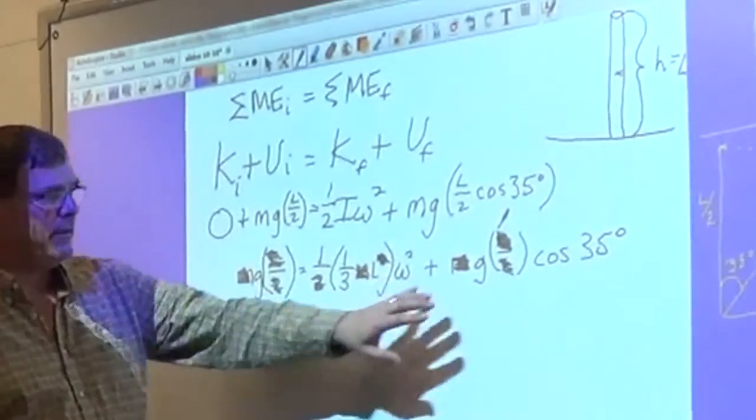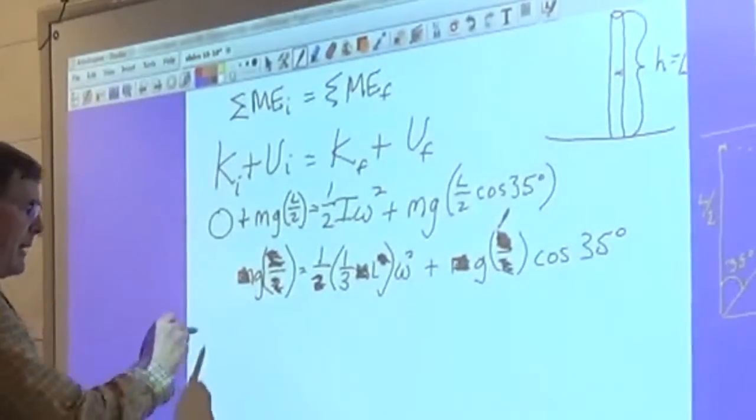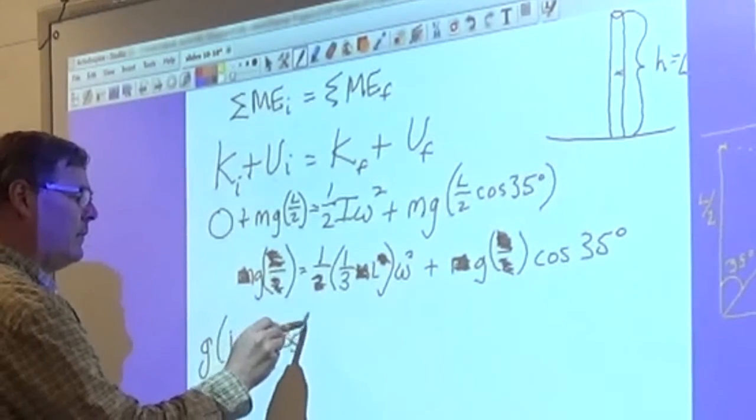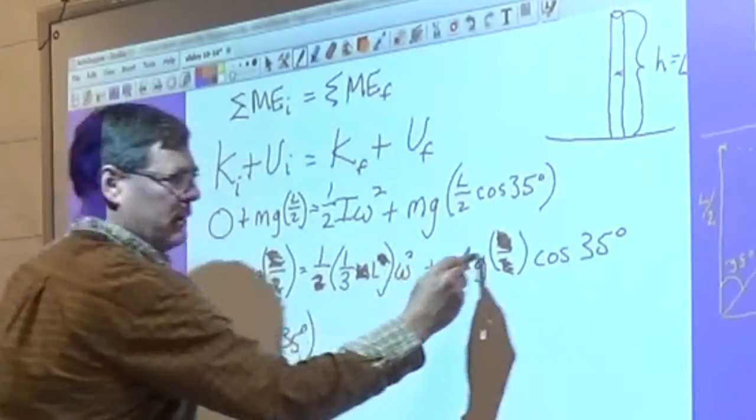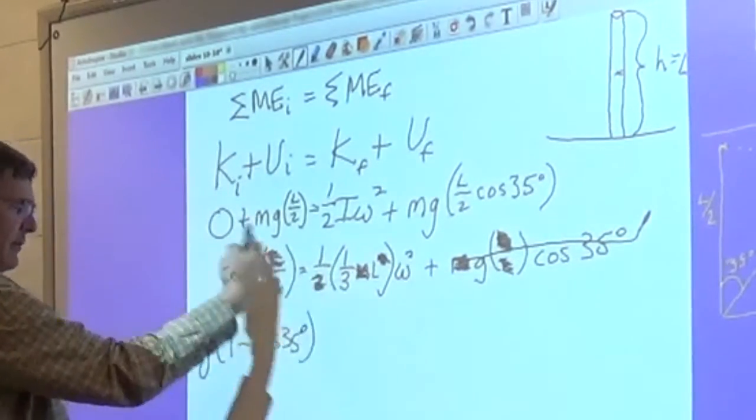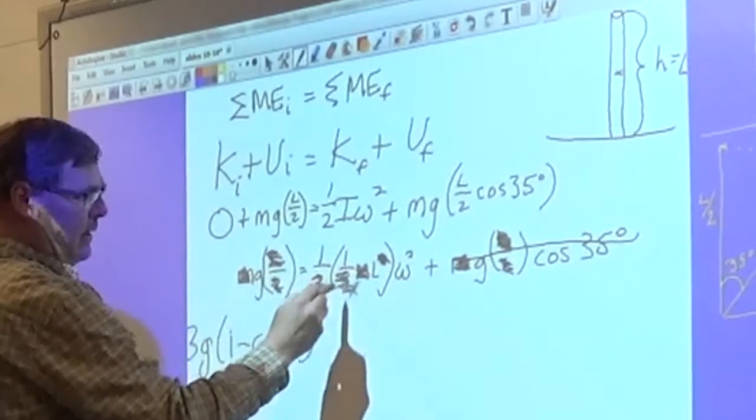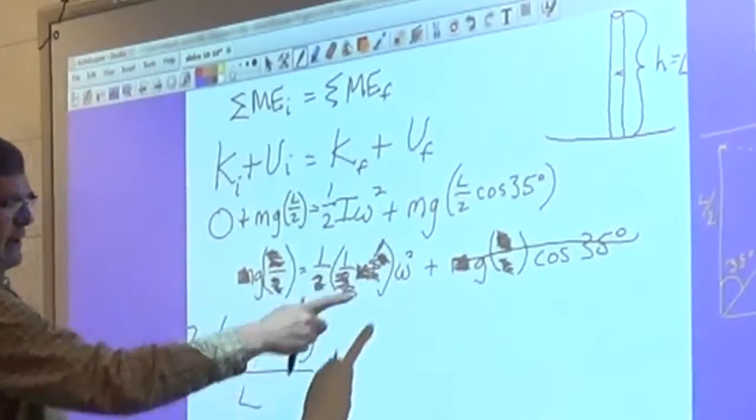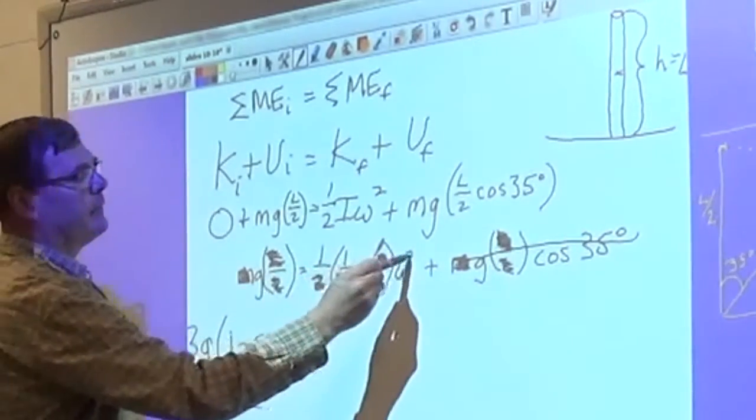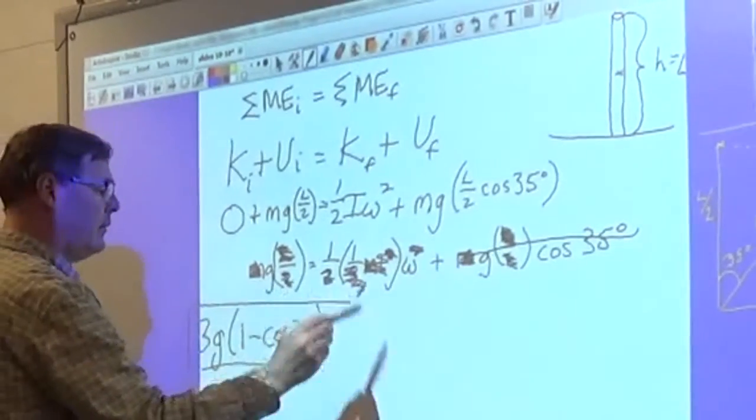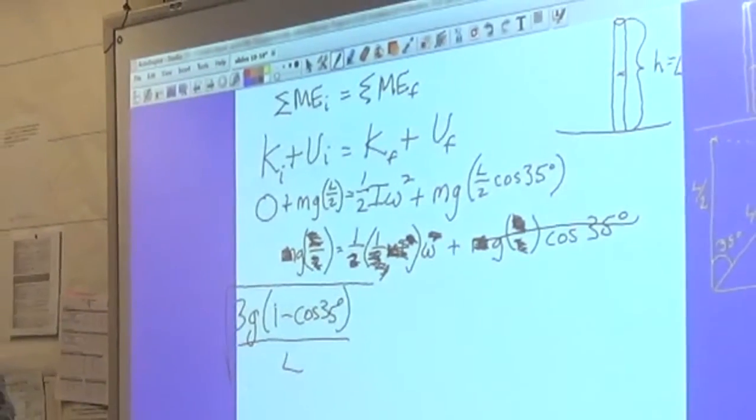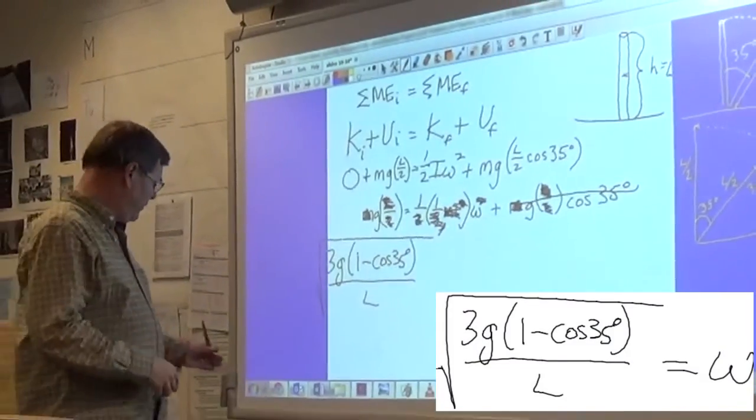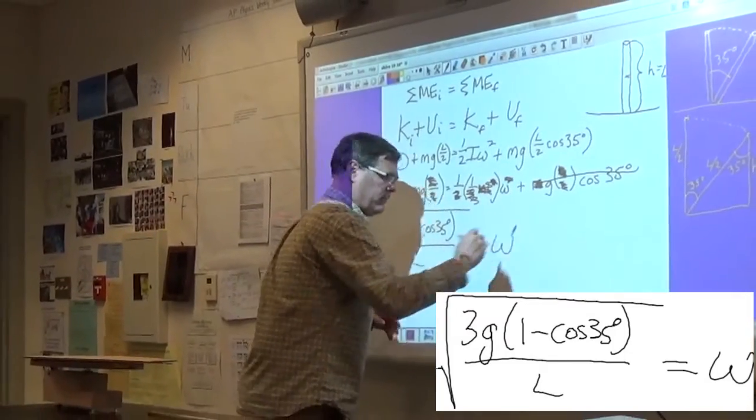Now I want to solve for omega. So I'll take this term and bring it to the other side and factor out the g. And then I want to cross-multiply this 3 to the other side. And I want to divide the l to the other side. And then I want to take the square root. And there is my expression for omega. So I know what g is. I know what the length of the chimney is. I can get my answer for omega. And I'm done.